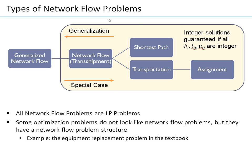Notice that in all those problems considered so far, whether more general or more special, the solutions were always guaranteed to be integer if all parameters in the constraints are integer — meaning all the supplies and demands were integer, and all lower and upper bounds on variables were integer. In most cases we had just lower bound zero and no upper bound, which also qualifies for an integer optimal solution.